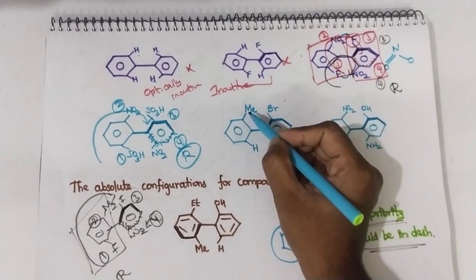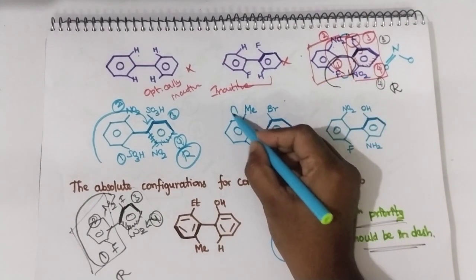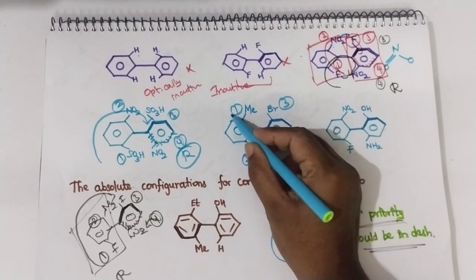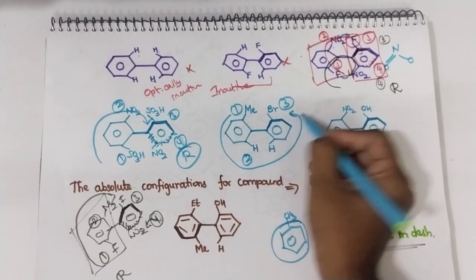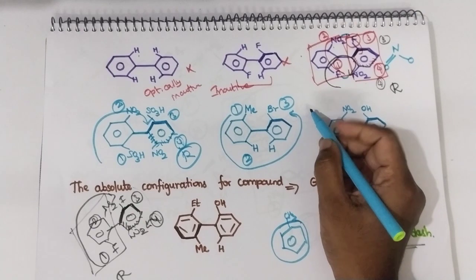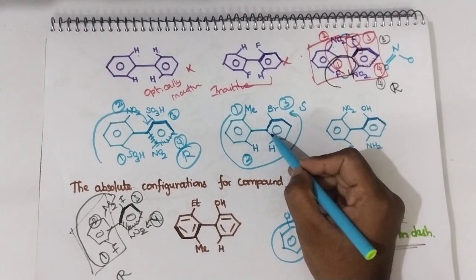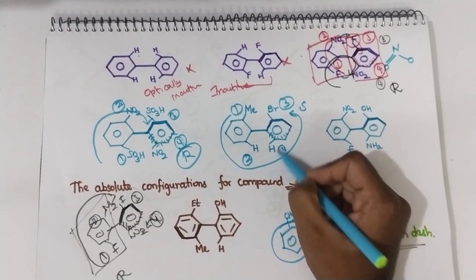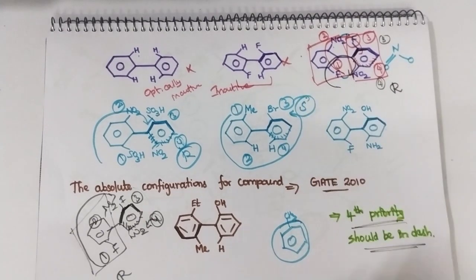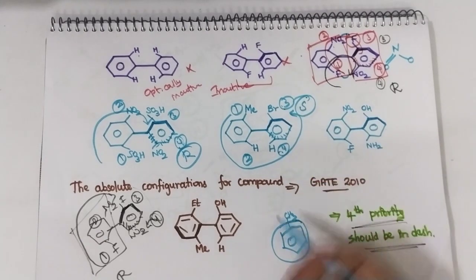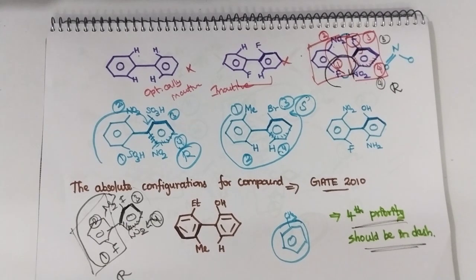In this case: methyl is 1, hydrogen — bromine is 3. Rotate 1, 2, 3 — it is anti-clockwise, which means S. Look for the 4th priority group — it is present on the dashed position, so no need to invert the configuration. It is S configuration. If suppose hydrogen is here and bromine is here, then you have to invert the configuration and write it as R configuration.